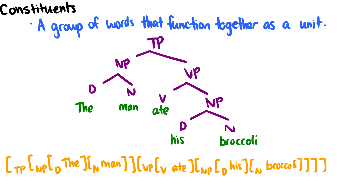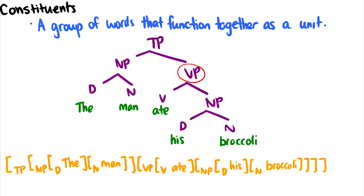If you look at a tree, you can identify the constituents by just picking up a node and seeing what comes with it. So if we pick up this NP, then we have this determiner and this noun dangling below it — so that is a constituent. If we pick up the VP, then we have the verb, the determiner, and the noun all picked up — so that is a constituent. If we pick up the TP, then we pick up all the words, so that whole sentence is a constituent. That also means each individual word is its own constituent as well.